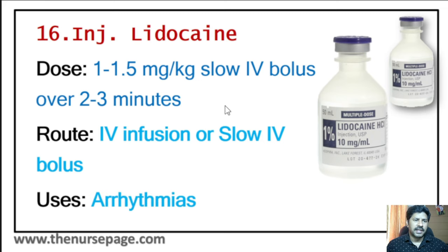Thirty-fifth injection is thiamine, used as an emergency medicine in Wernicke-Korsakoff syndrome, alcohol withdrawal syndrome, and certain types of drug overdose. Route is intravenous or intramuscular. Dosage is 100 milligram IV or IM, repeated as needed every 8 to 12 hours. In alcohol withdrawal or Wernicke's syndrome, dosage may be increased to 500 milligram IV or IM daily.